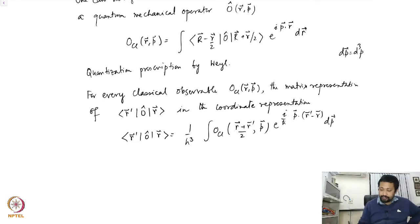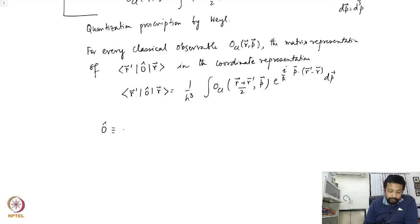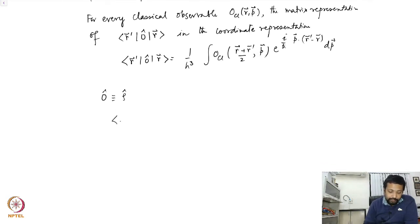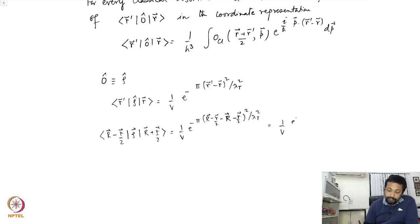Let's first validate this for the case of a single particle. Take O-hat as identical to the density matrix in the canonical ensemble, where ⟨R' | O-hat | R⟩ equals (1/V) times e to the power minus π(R'−R)² divided by λ_T². Following the Wigner transformation, we write this as ⟨R−r/2 | ρ-hat | R+r/2⟩, which becomes (1/V) e to the power minus π·r² over λ_T².